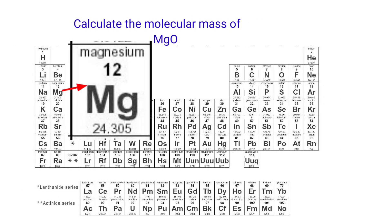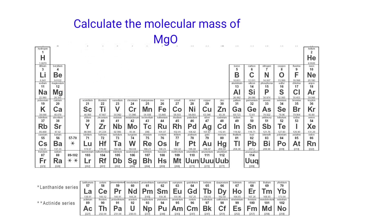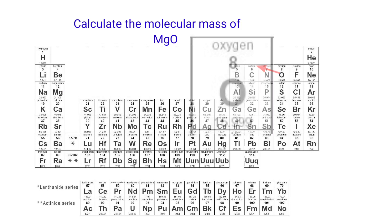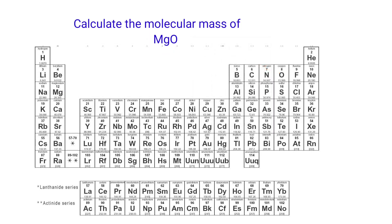The atomic mass of magnesium is 24.305, and the atomic mass of oxygen is 15.999. In an MgO molecule, there is one magnesium atom and one oxygen atom present.